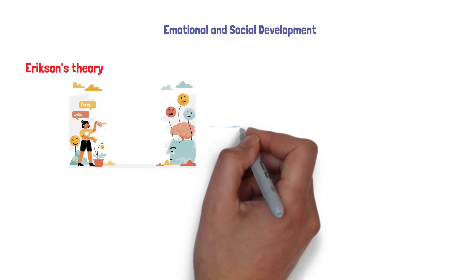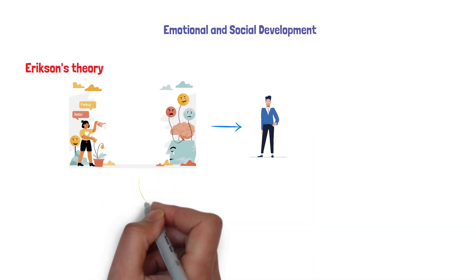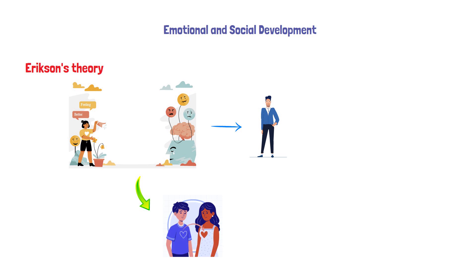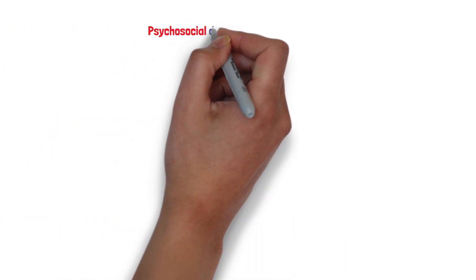Erickson's theory of psychosocial development continues to be relevant in early adulthood, focusing on intimate relationships and the establishment of personal and professional identities. Other psychosocial development theories also emphasize the importance of navigating the complexities of adult relationships.